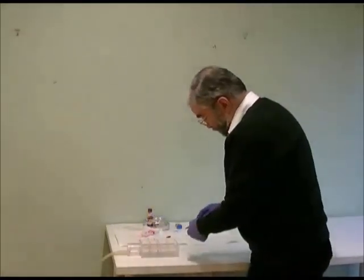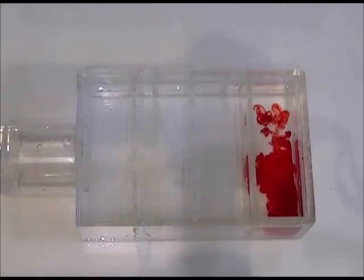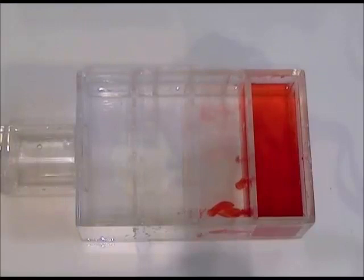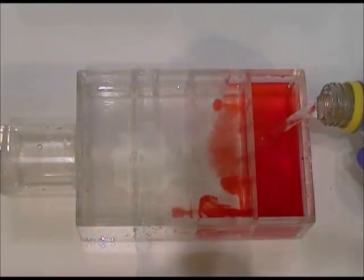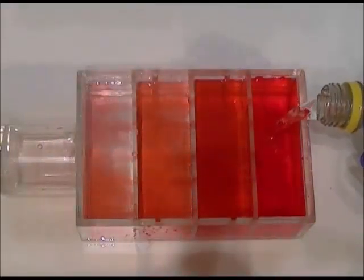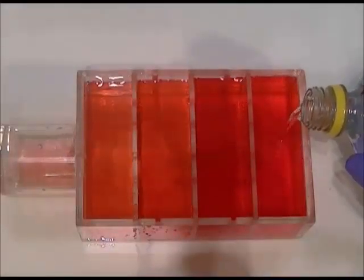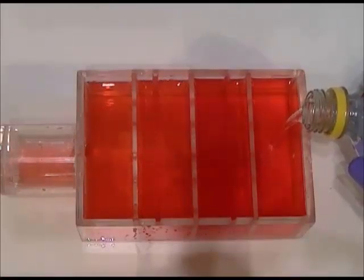If I add some tracer to this end compartment here and mix that, and then I start the flow going, we'll see that we start with a high concentration in the first compartment, but nothing in any of the others. And as we start going, it rapidly builds up in the second compartment, a bit slower in the third, eventually in the fourth compartment, and meanwhile the first compartment is going down.